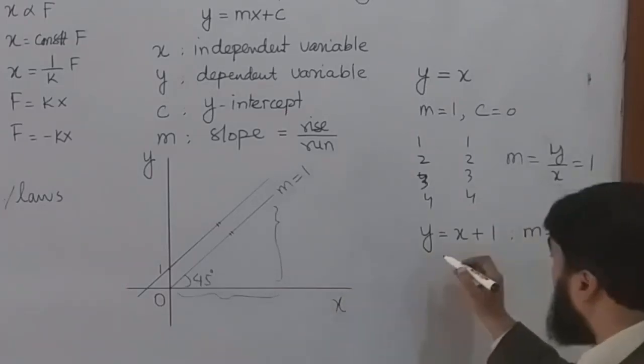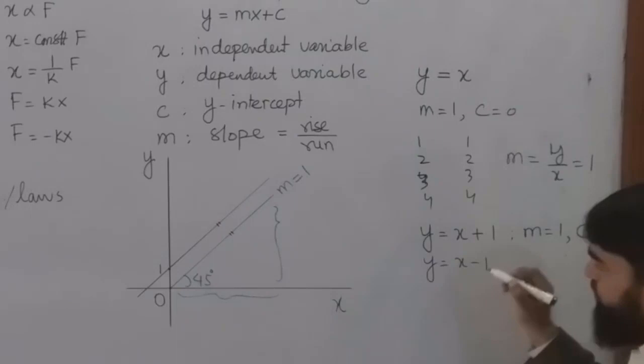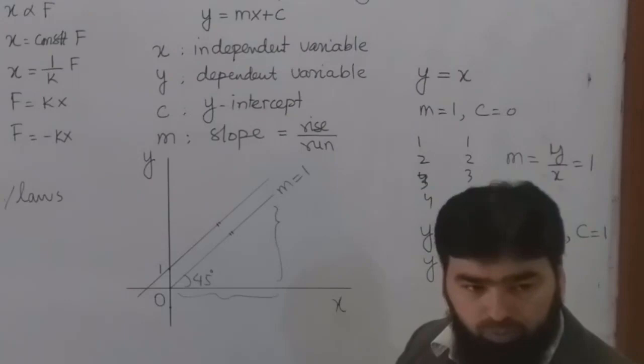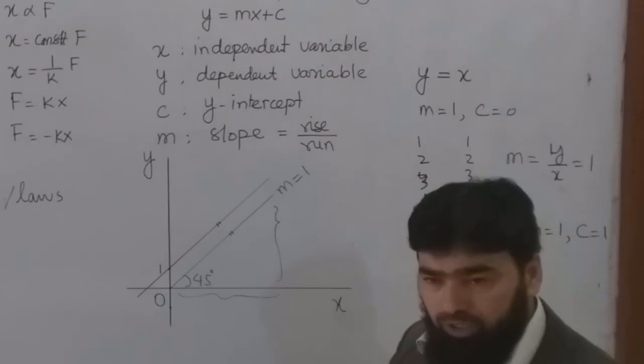If I write y = x minus 1, then what will happen? The line will actually start from minus 1, but the slope will remain the same. All these lines will be parallel to each other.